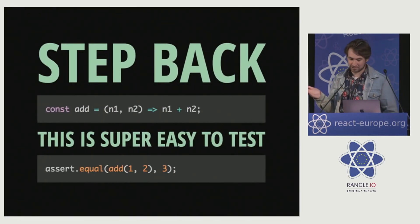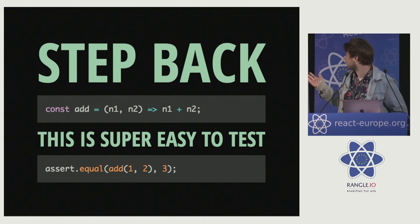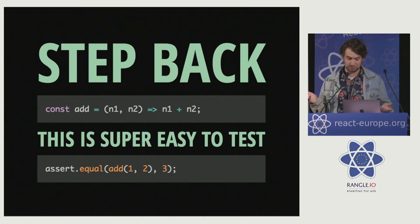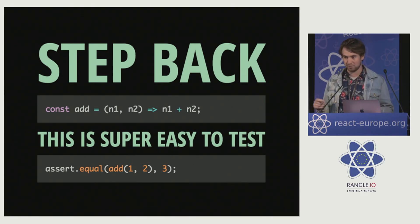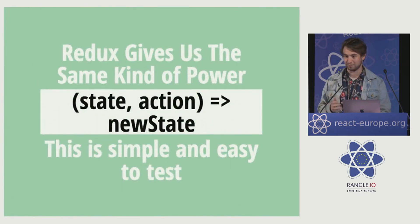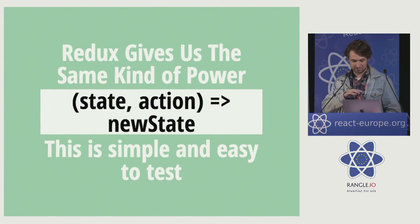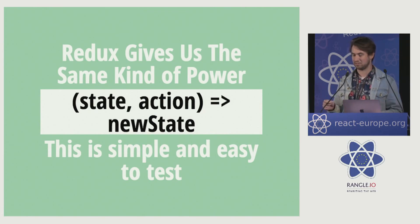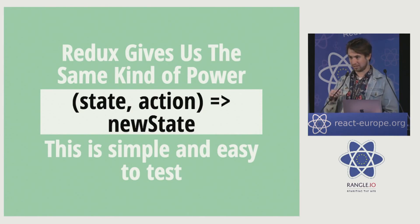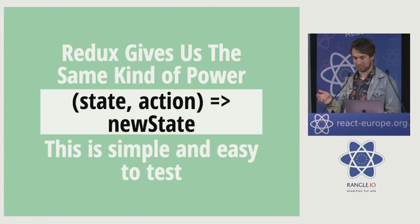If we step back for a second, you can see this really simple function: add one plus two. You see how easy it is to write a test for it — add(1, 2), it equals three. Done. That took me like 20 seconds to write. Redux gives us the same power: you take a state and an action, it produces a new state. It's easy to test — there's no outside things affecting this function. I give it this action, I have this state right now, it's going to produce a new state every time.